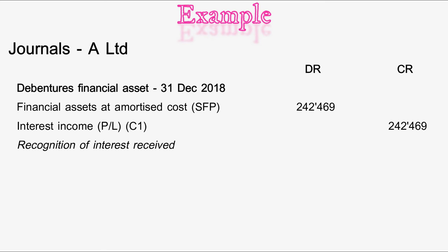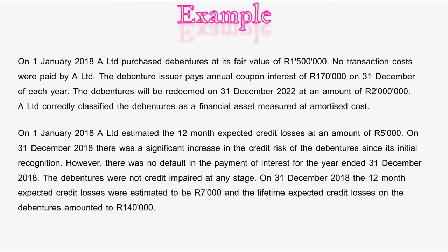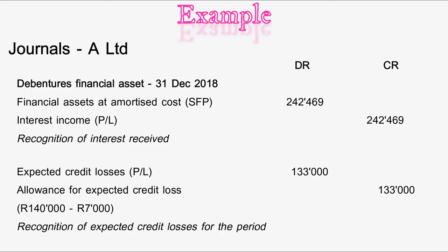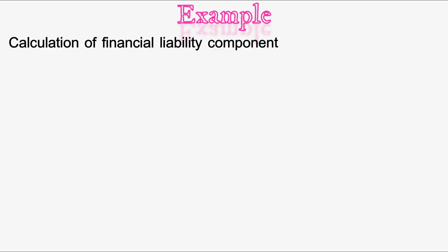Now we look at the recognition of expected credit losses for the period. The lifetime expected credit losses amounted to 140,000 rand, and the 12-month expected credit losses were estimated at 7,000 rand. Journal entry: Expected Credit Losses (Profit or Loss) — debit 133,000 rand; Allowance for Expected Credit Loss — credit 133,000 rand. This is 140,000 minus 7,000 rand.